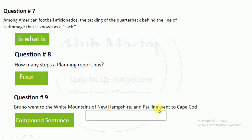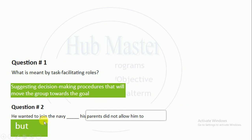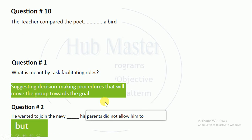I added the MCQ again. We have to add two independent clauses for compound sentences. What is meant by task facilitating? These are the ones I have covered with you.